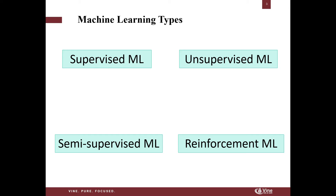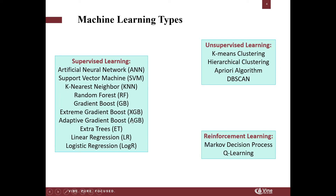Today I'm going to talk about building supervised machine learning models and show you a case study on that. Some well-known algorithms within supervised learning include ANN, support vector machine, K-nearest neighbor, random forest, decision tree algorithms, gradient boosting, and adaptive gradient boosting. Each one of these algorithms has certain applications, and depending on the problem you're trying to solve, some may provide more accurate results than others.